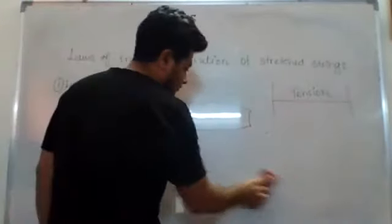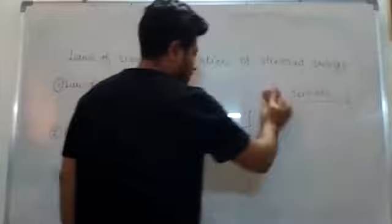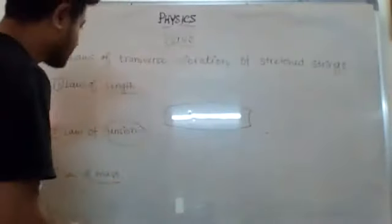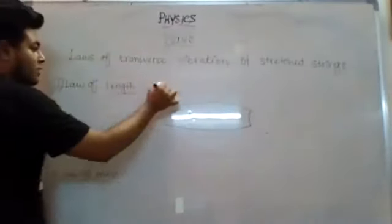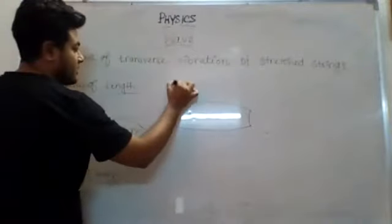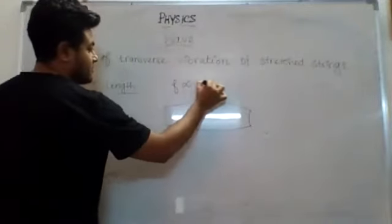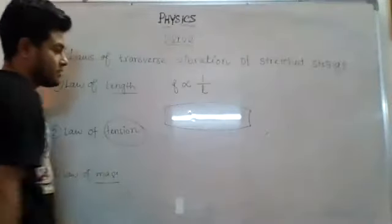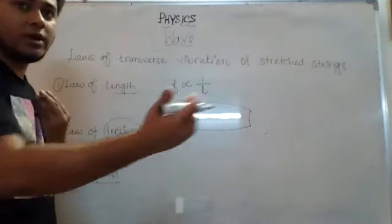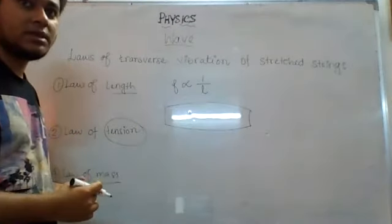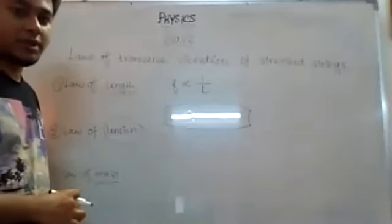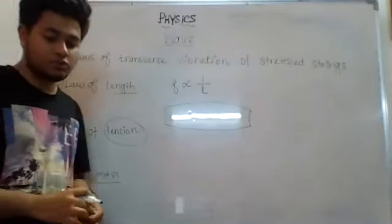Now let us start relating them with frequency. What is the relationship between length and frequency? The Law of Length states that frequency f is inversely proportional to the length. That means the longer the wire is, the less frequency you will get.